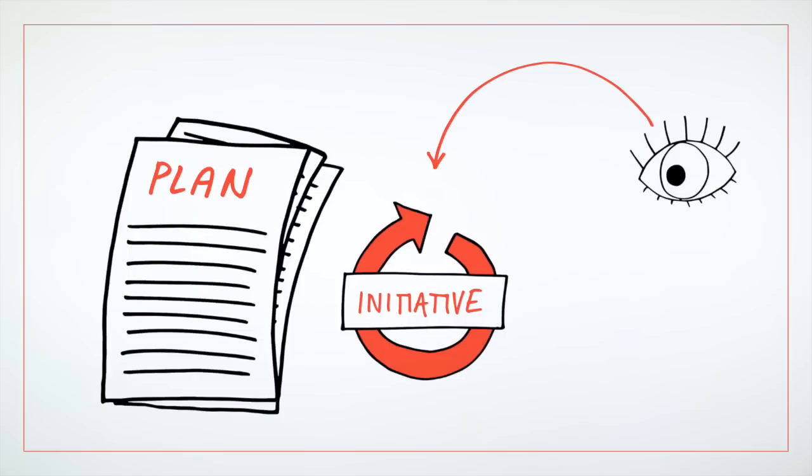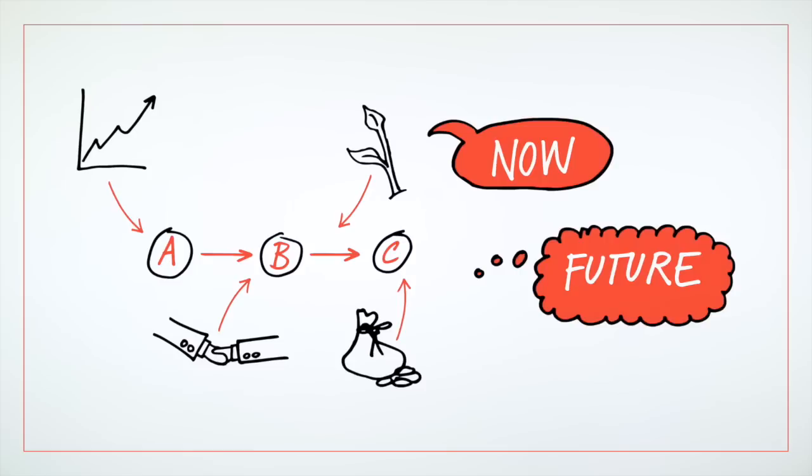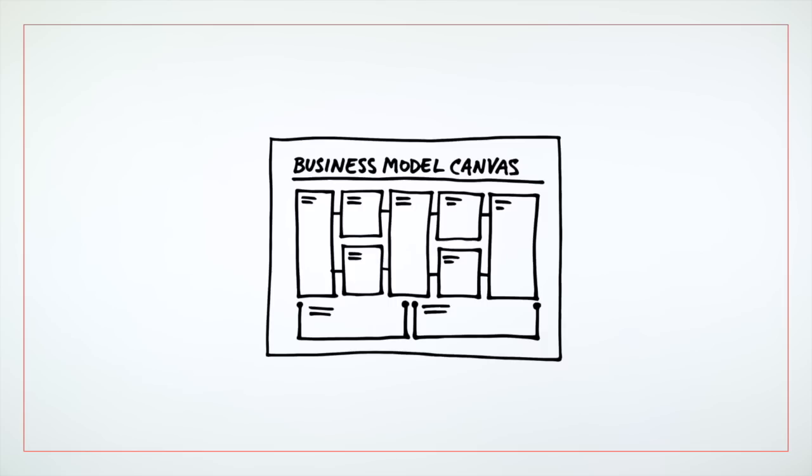When you are planning or looking back at an initiative, it is useful to look at how things are done now and how they could be done better in the future. The business model canvas is a helpful way of mapping out possible opportunities and failures.